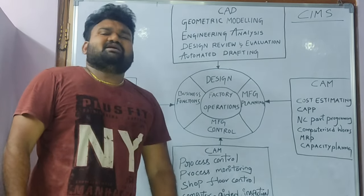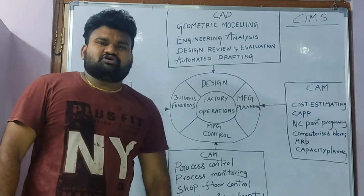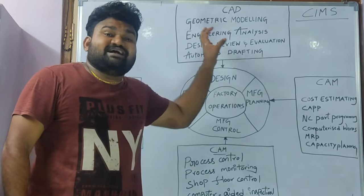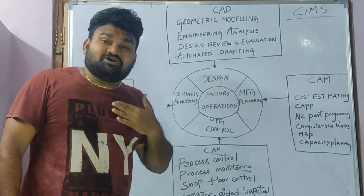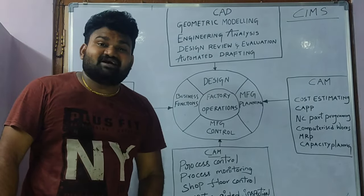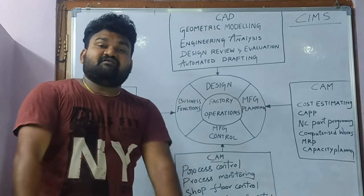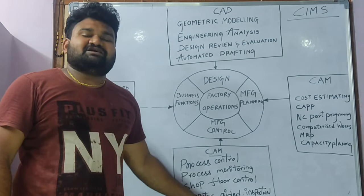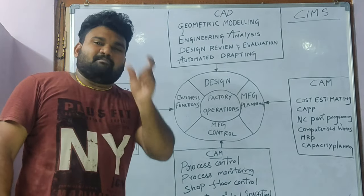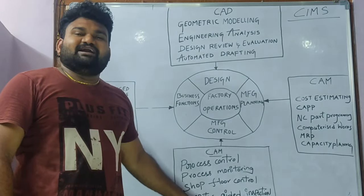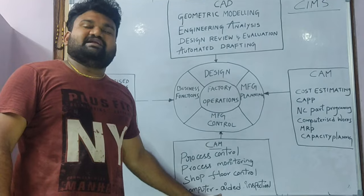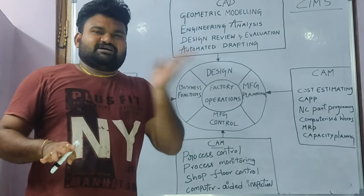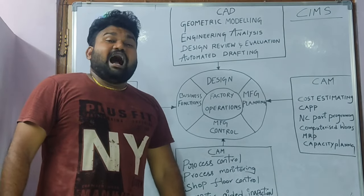Product inspection — we inspect the component. We have the specifications and we have the quality. We inspect the component against the specifications. Inspection is complete. Then the product is shipped — product shipping.